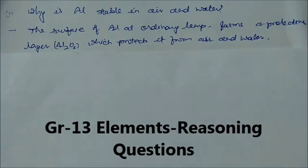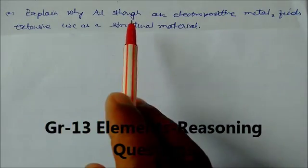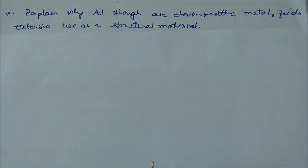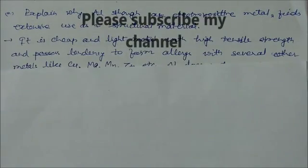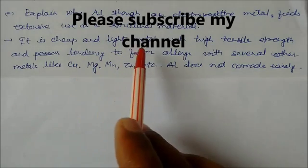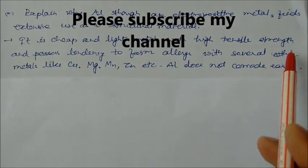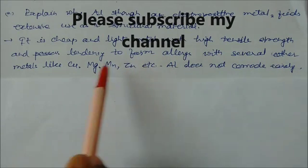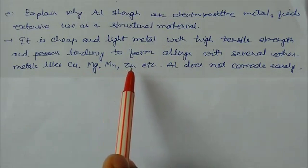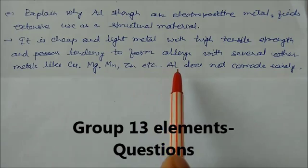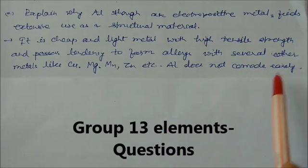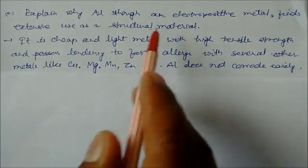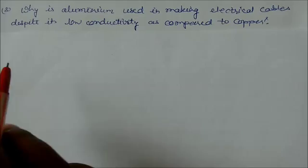Explain why aluminum, though an electropositive metal, is extensively used as a structural material. It is a cheap and light metal with high tensile strength and has a tendency to form alloys with several other metals like copper, magnesium, zinc, etc. and it does not corrode easily. That's why it is extensively used as a structural material.